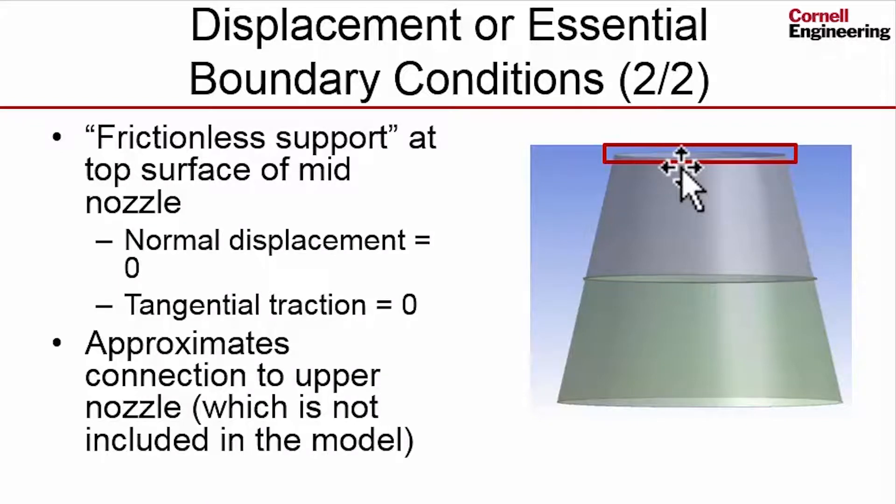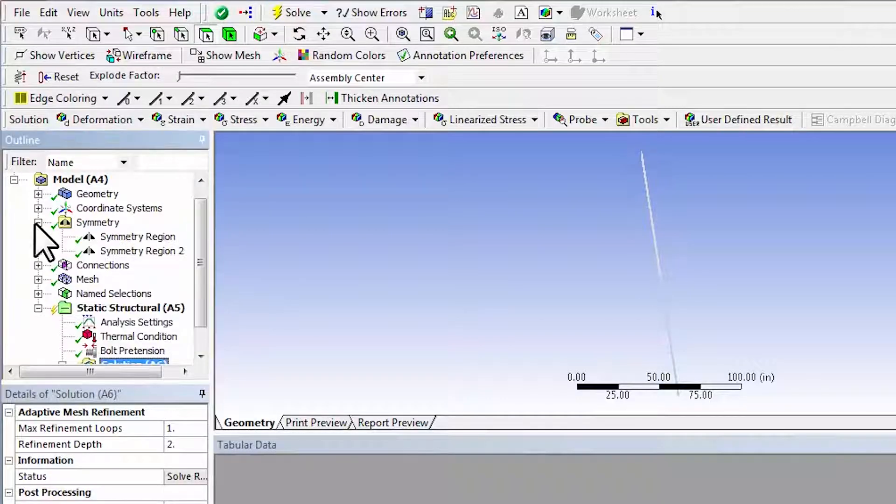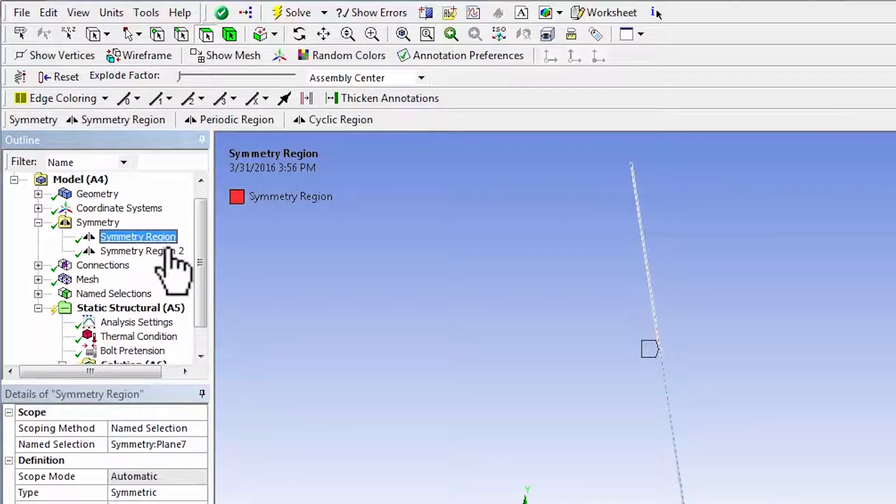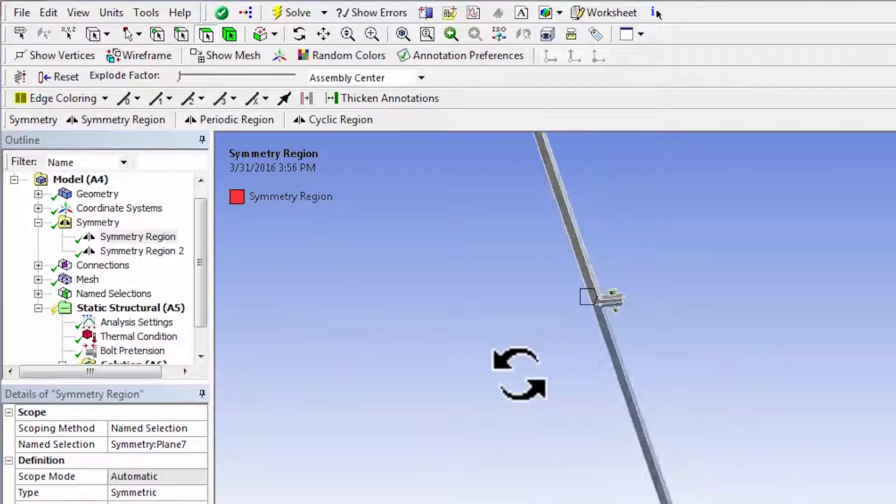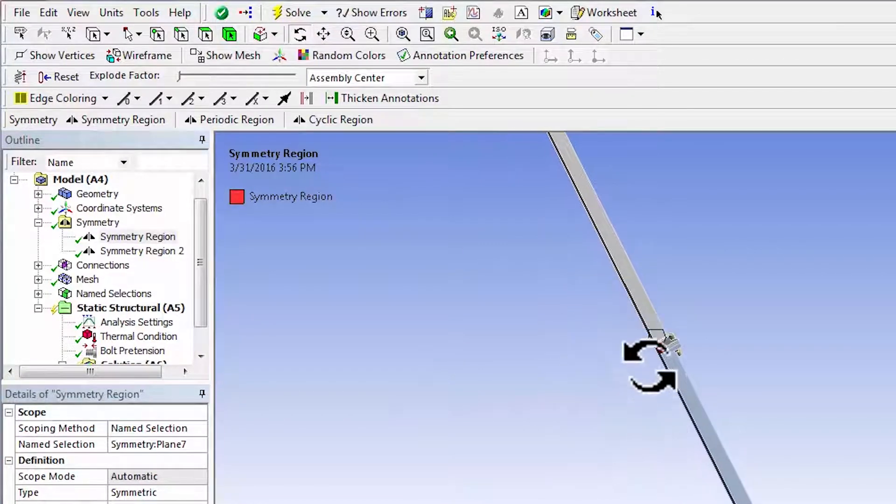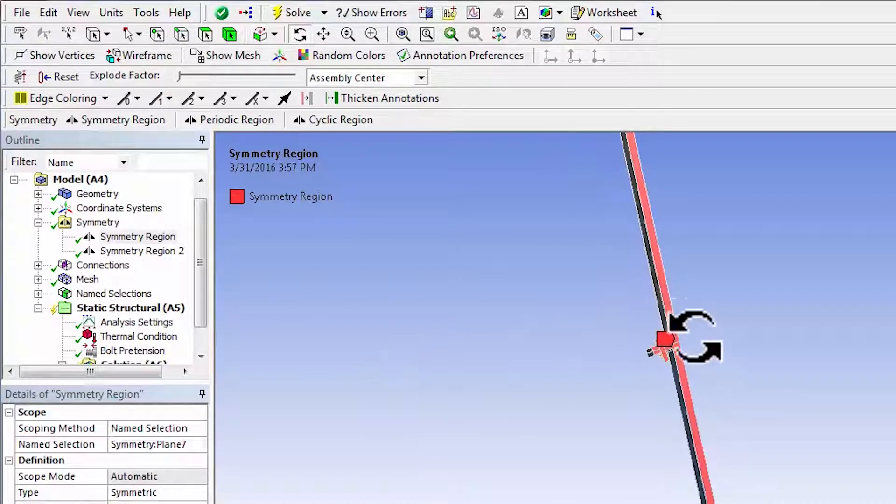So I'll go into mechanical. If I highlight symmetry here, there's a symmetry region over here. And so if I zoom into the model and manipulate it, I'll say rotate about this point. That's a symmetry plane, and that's come in by default because of the symmetry in the geometry imposed in the geometry.